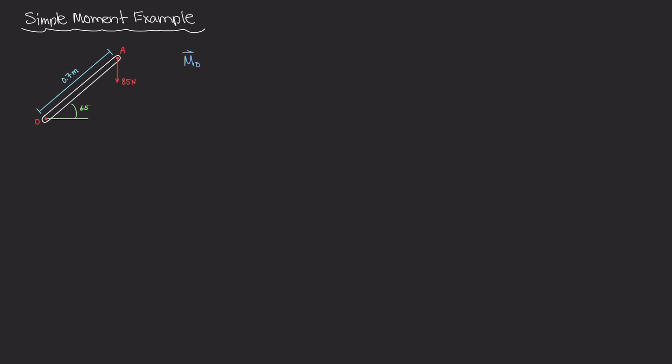We're going to solve this problem in two different ways. One is a graphical approach using the right-hand rule and intuition about finding and calculating moments. The second way is going to be the equation way. The equation for a moment is R cross F. You might think R is just going from here all the way to point A, because that's where the force is located. But when calculating moments, the position vector really should be to the perpendicular line of action for that force for the easy, quick way.